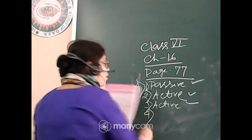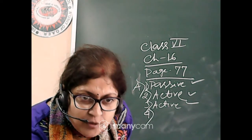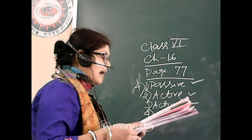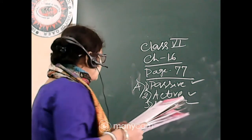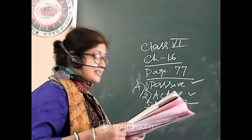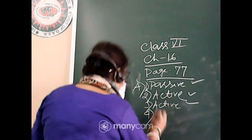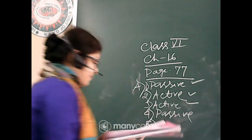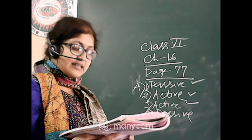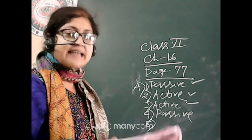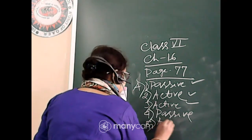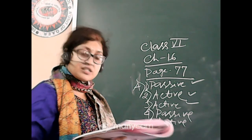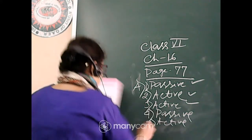Number four: 'The poem was written by John Keats.' This is passive voice. Number five: 'I will pluck all the flowers in the evening.' I will pluck — this is active voice. Number six: 'Rishan has completed the project.' This is also active voice.